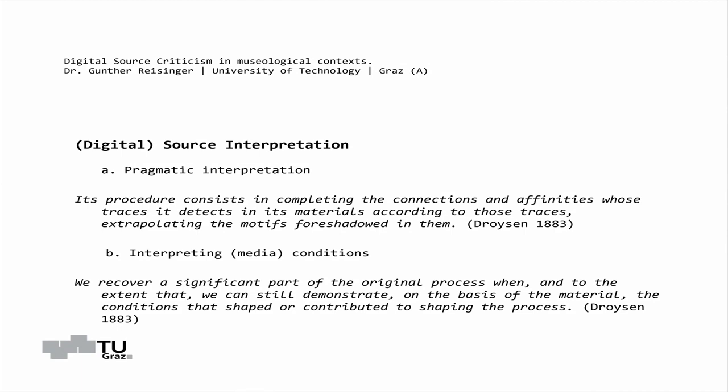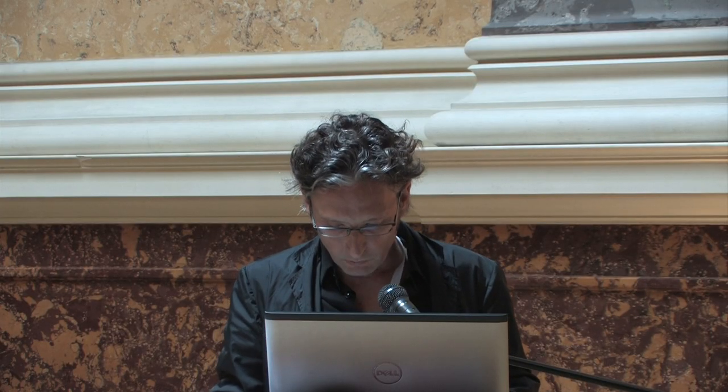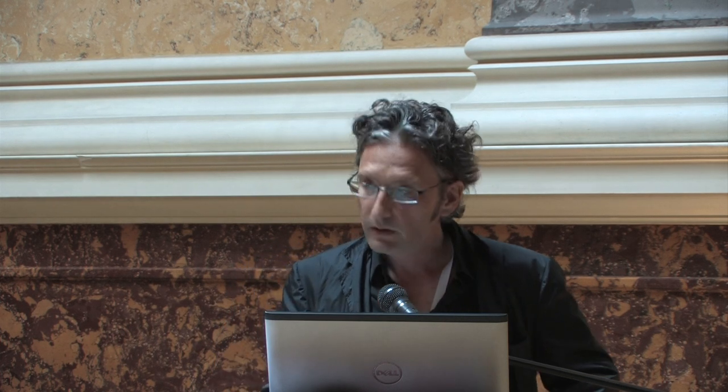The second step of source interpretation is interpreting the conditions. Quoting Treusen, 1883: 'We recover a significant part of the original process when we can still demonstrate on the basis of the material the condition that shaped or contributed to shaping the process.' The documentation of digital and digitized sources is specifically derived from Treusen's documentation because it is process-oriented. Documenting the origin and the media transformation of the source is of greatest interest for any further historical and museological research.